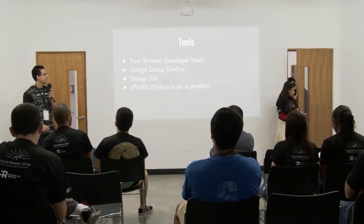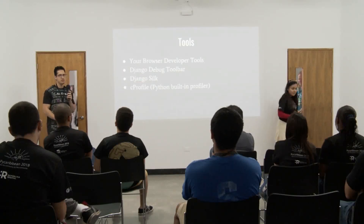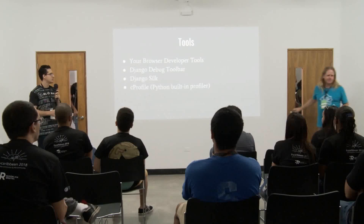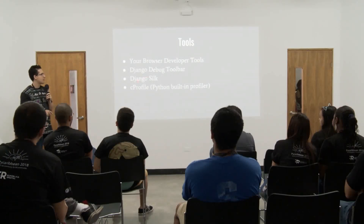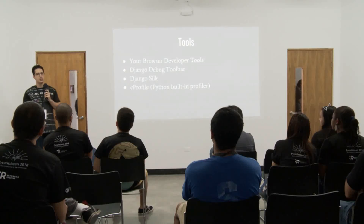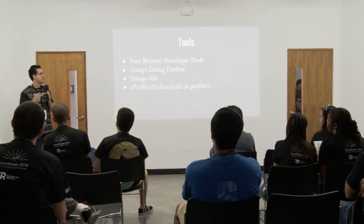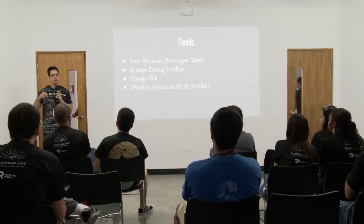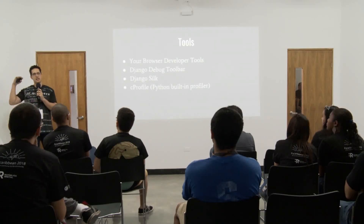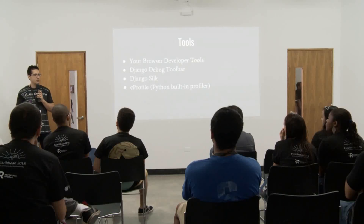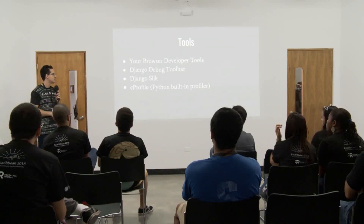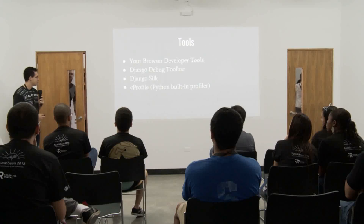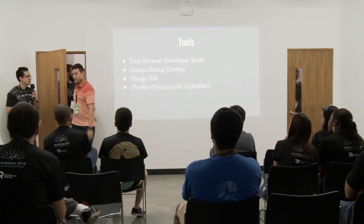Django Toolbar is basically the most used tool for this purpose, and it's the one we'll be using and showing. Django Silk is another library you can use to profile functions, database queries, download time, and so on. It's very powerful because you can profile isolated things like a view, a single function, or a block of code. And of course you can also use the built-in Python profiler, which is very powerful.